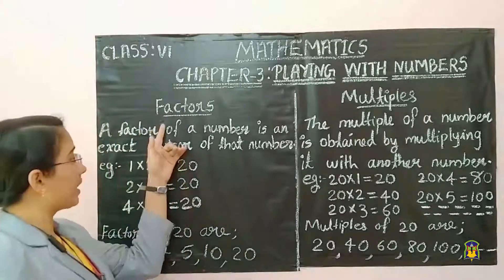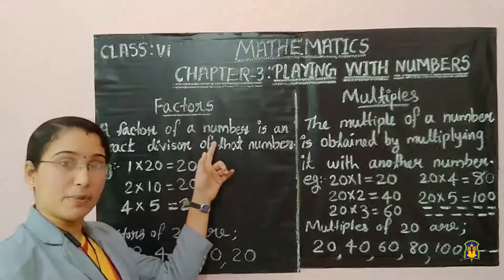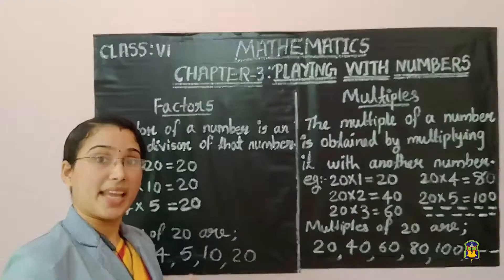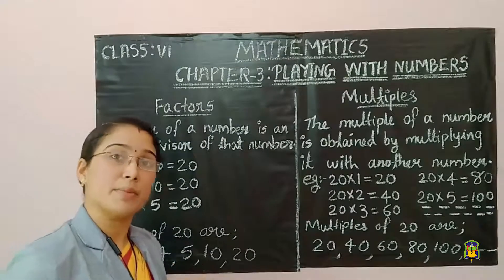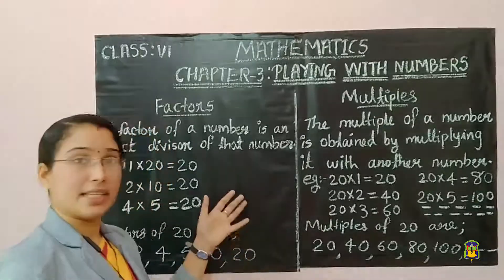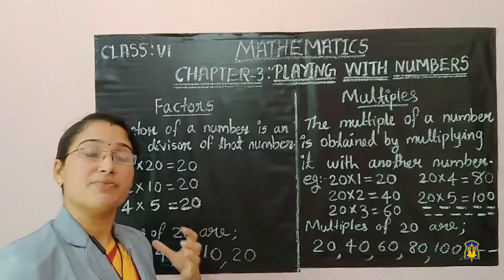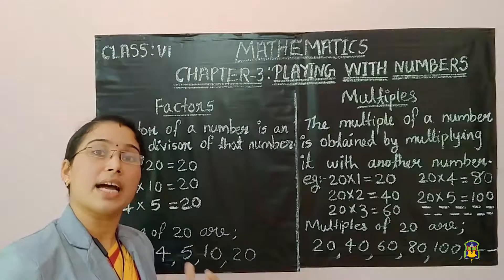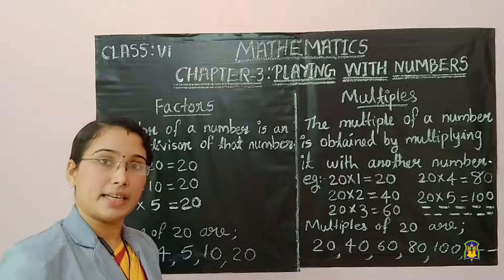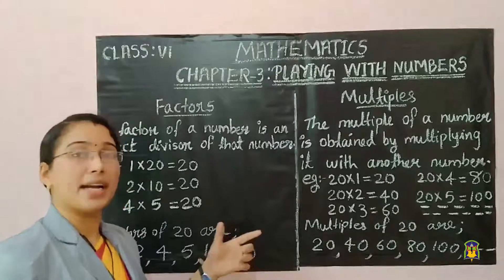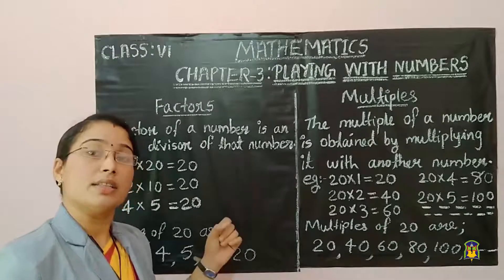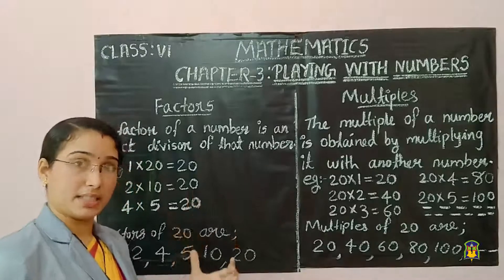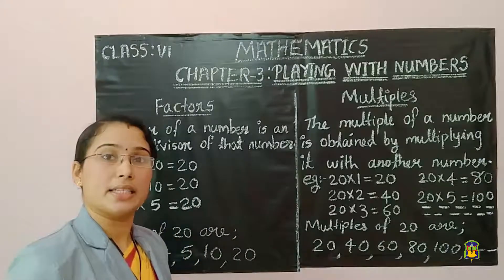Factor. A factor of a number is an exact divisor of that number. What is meant by exact divisor? In the case of division, which divisors give the remainder 0? Those divisors are called exact divisors. If the remainder is not equal to 0, then those divisors are not exact divisors. Divisors must give the remainder 0.